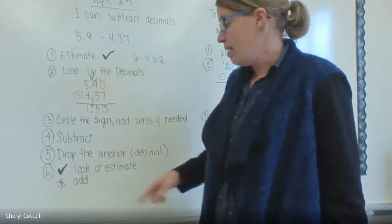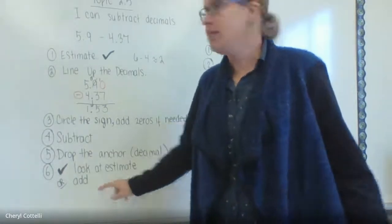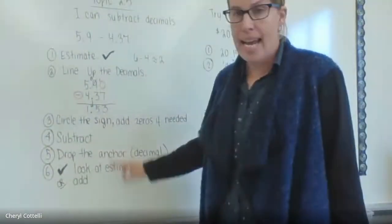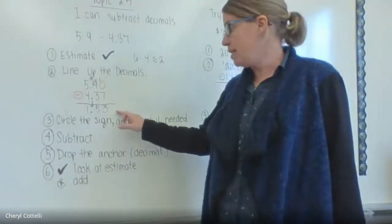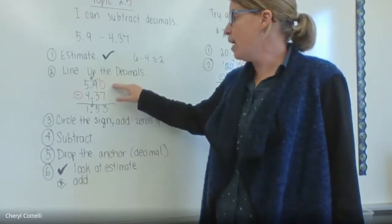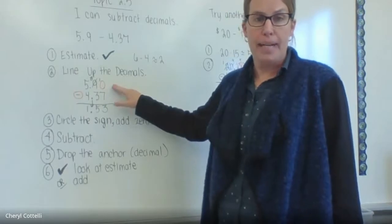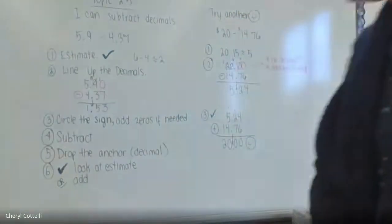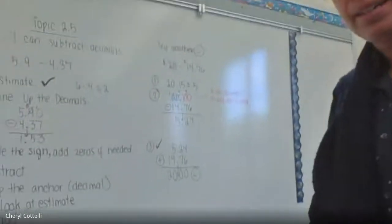Another way to check is you can actually add. You can take your answer or your difference, add it to 4.37, and if you do it right you should get 5.9. So that's another way to check our answer. Let's try another one because you'll see a lot like this in fifth grade.